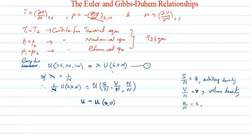So this is yet another way of writing the energy representation in terms of densities. The entropy per number of particles is the entropy density, and the volume per number of particles is the volume density. Note that here 'density' means per number of particles, which is different from the usual mass density (mass per volume). This symbol will be used in discussing the Euler and Gibbs-Duhem relationships.